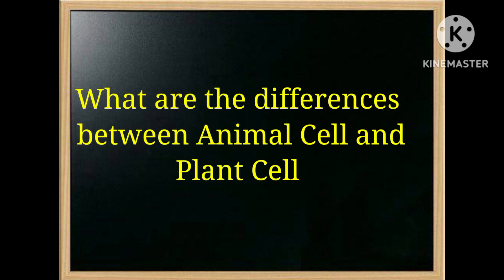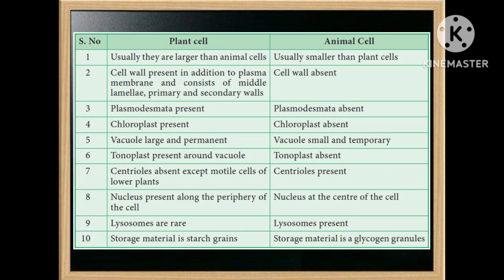What are the differences between animal cell and plant cell? Plant cells are larger than animal cells, and animal cells are smaller than plant cells. Cell wall is present in plant cells and absent in animal cells. Plasmodesmata is present in plant cells and absent in animal cells. Chloroplast is present in plant cells and absent in animal cells.